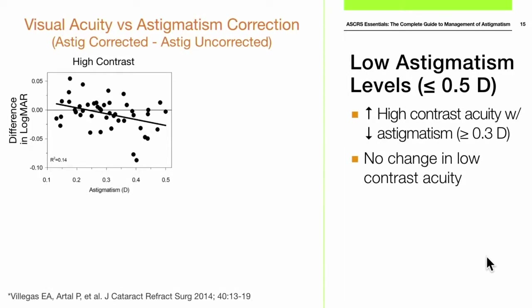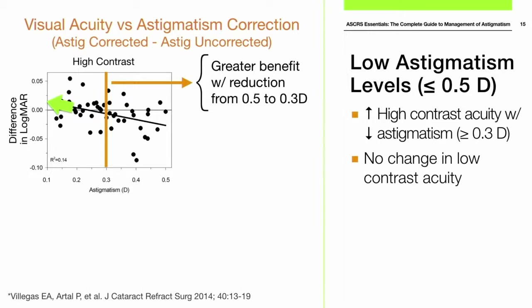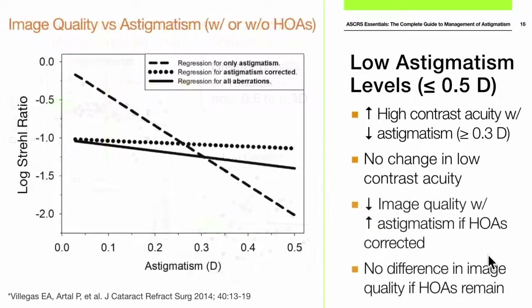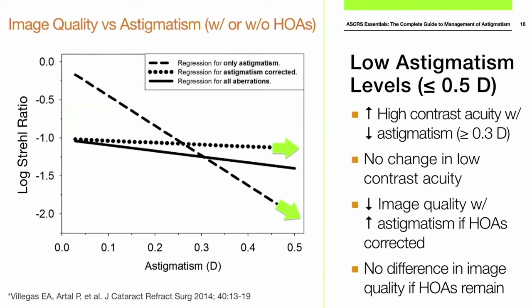Low levels of astigmatism are of particular interest because that's what we're trying to achieve. If we look at high-contrast acuity and decrease astigmatism from half a diopter, we see some improvement, but that effect is mostly seen as we decrease from about 0.5 to about 0.3 diopters. For low-contrast acuity, there's really no benefit to decreasing astigmatism below half a diopter. Furthermore, when higher-order aberrations are included, they remove the benefit of decreasing astigmatism at low levels.